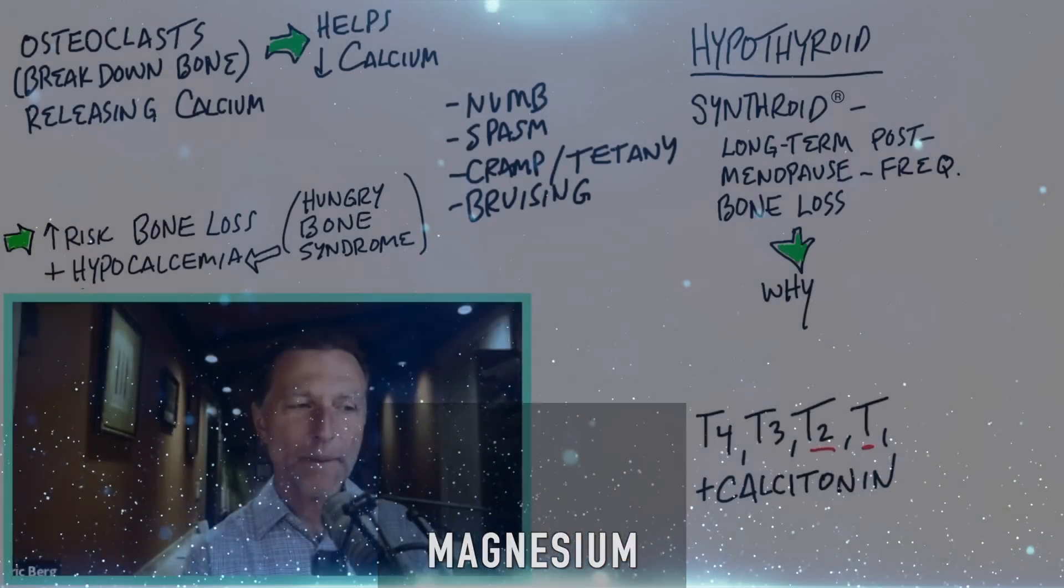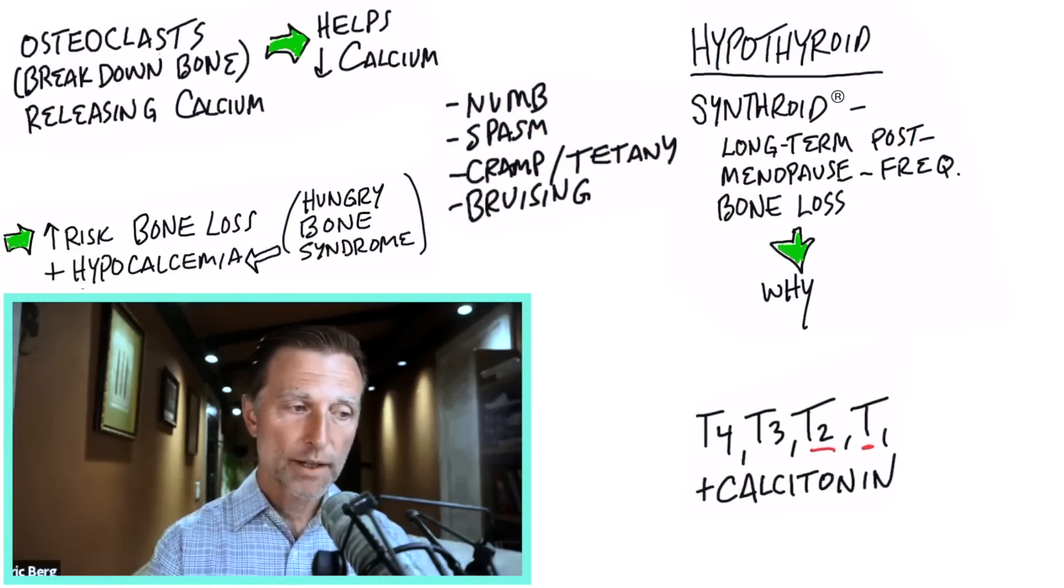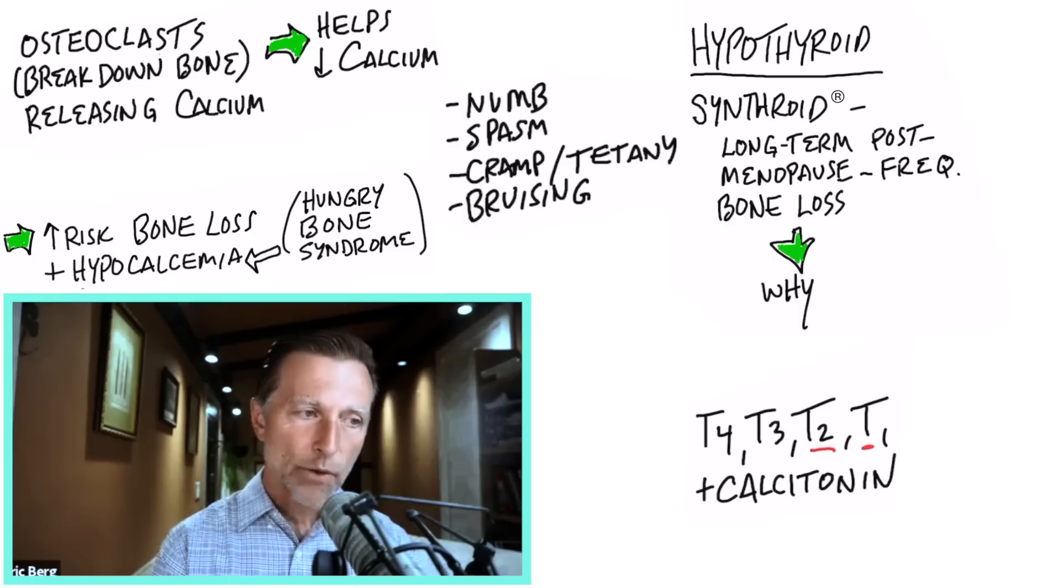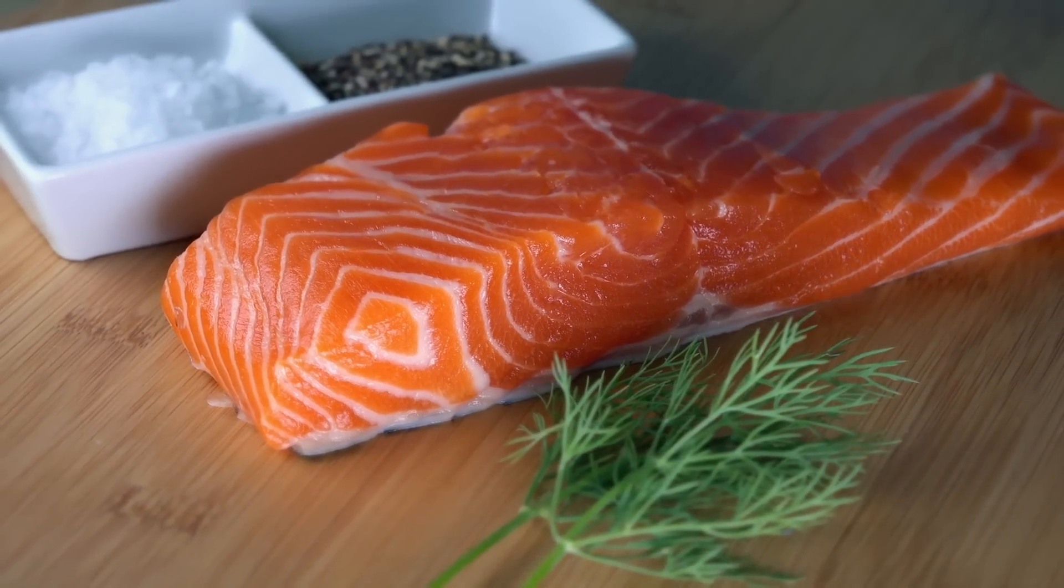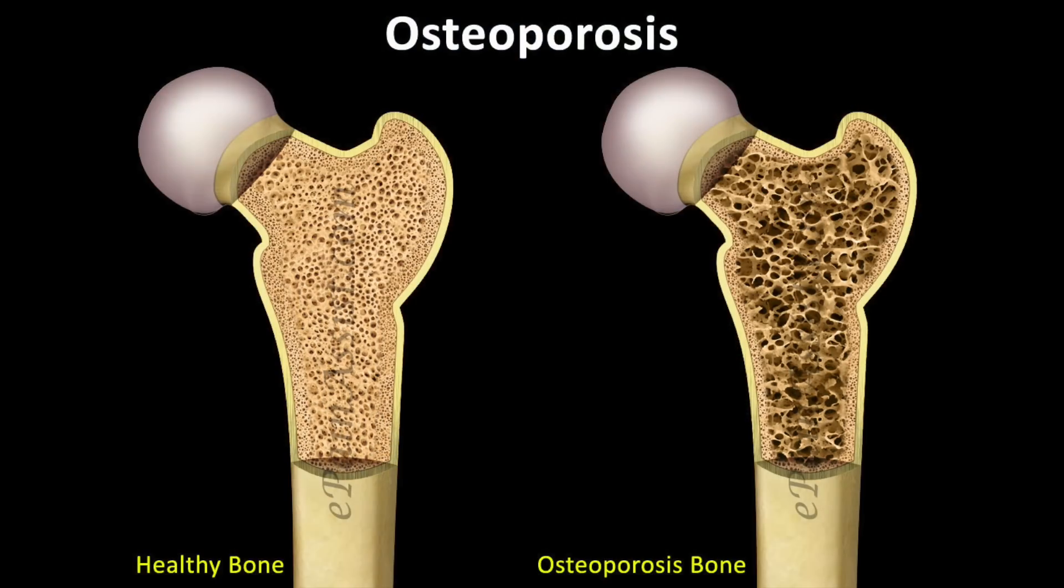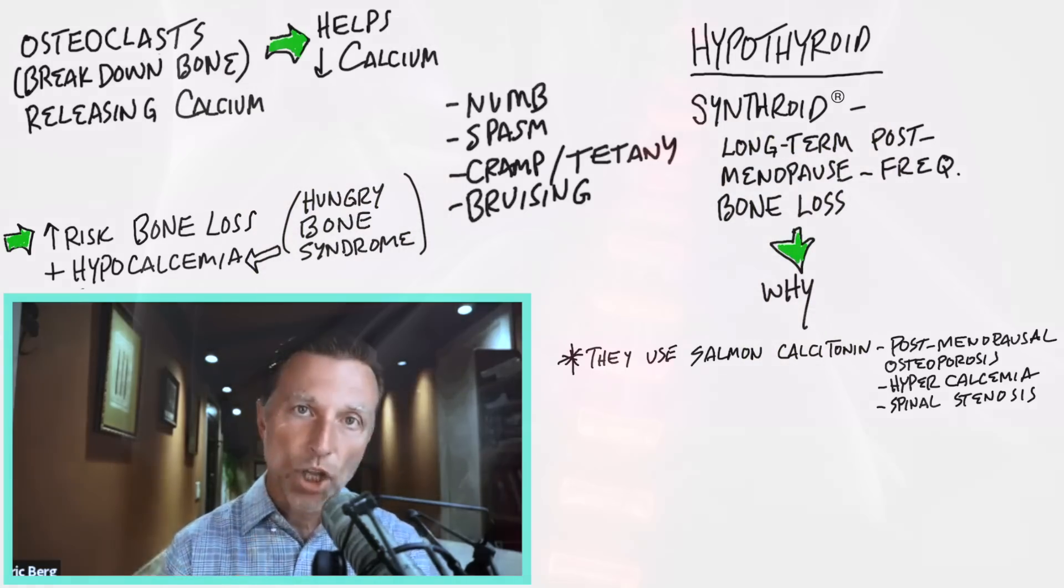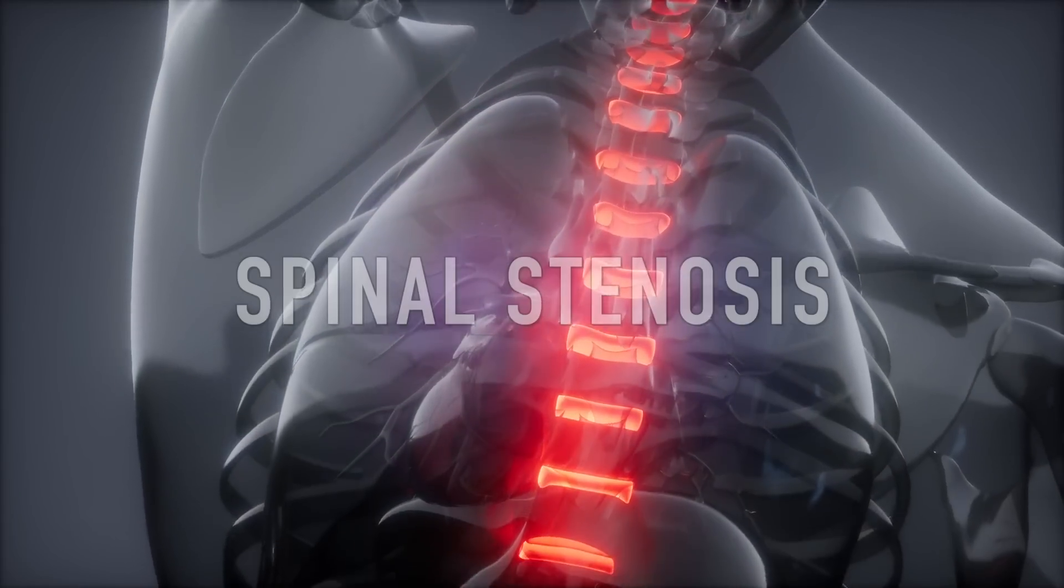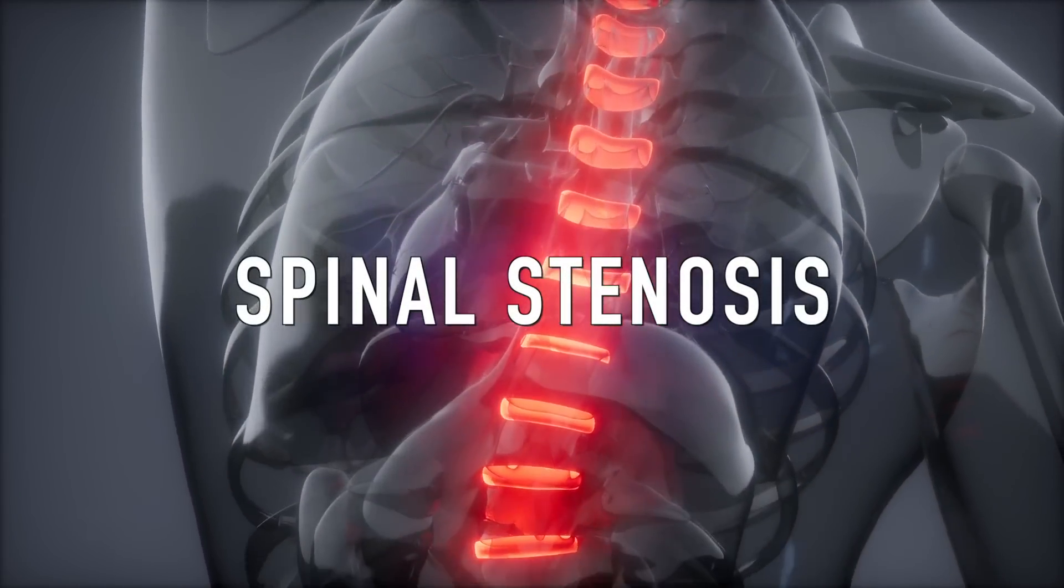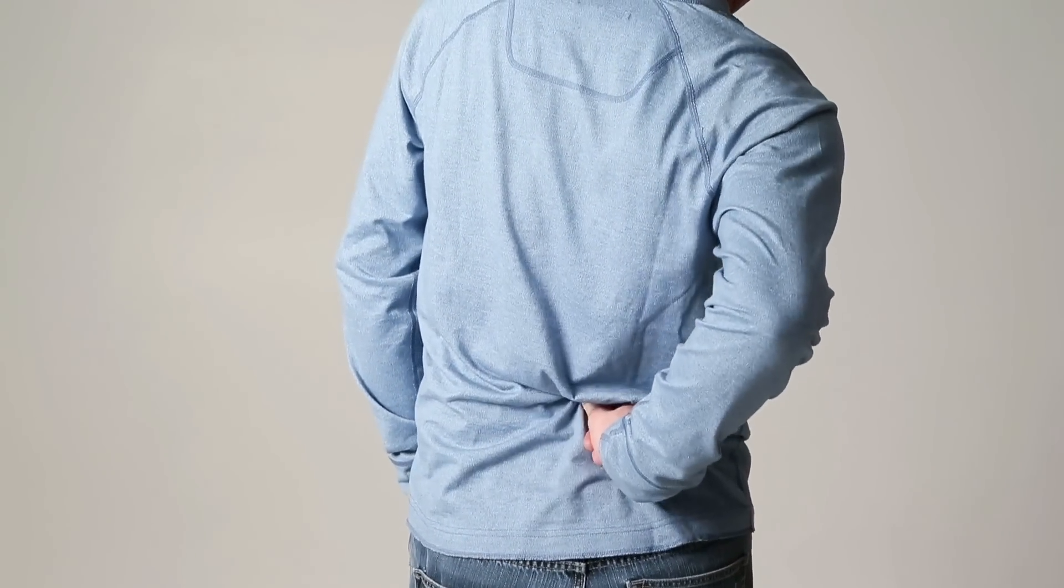So these are just things that you should know about going into a surgery for your thyroid, or if you have hypothyroidism and you're getting treated or you're on Synthroid. They even have a treatment. It's giving someone calcitonin from salmon for osteoporosis, too much calcium in the blood. It's called hypercalcemia because calcitonin helps lower calcium. And it's even used as a treatment for spinal stenosis, which happens to be like a buildup of calcium in the spinal cord, causing pain, things like that.